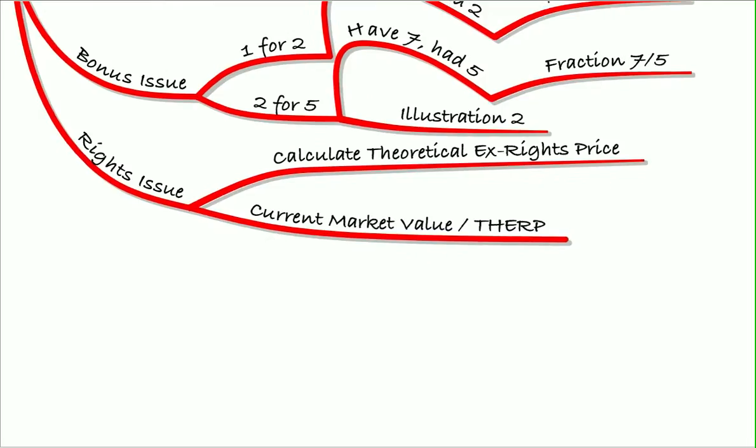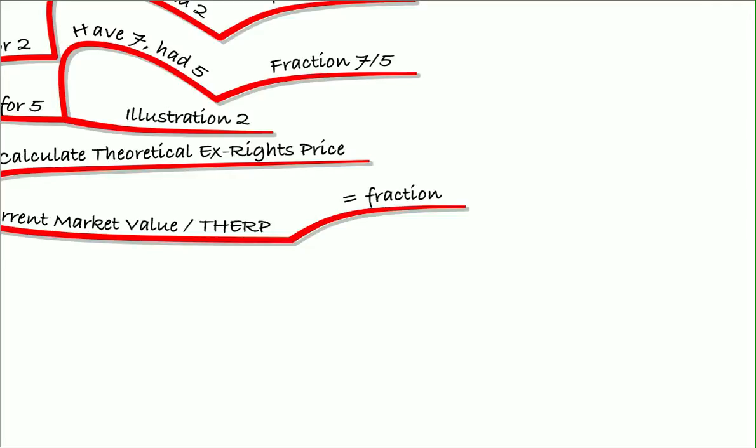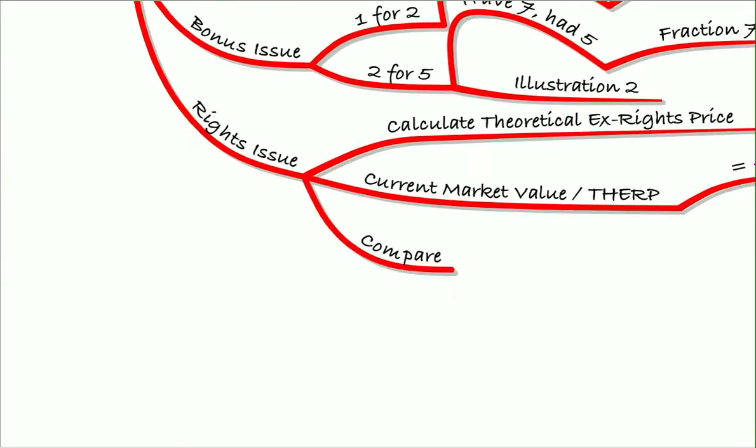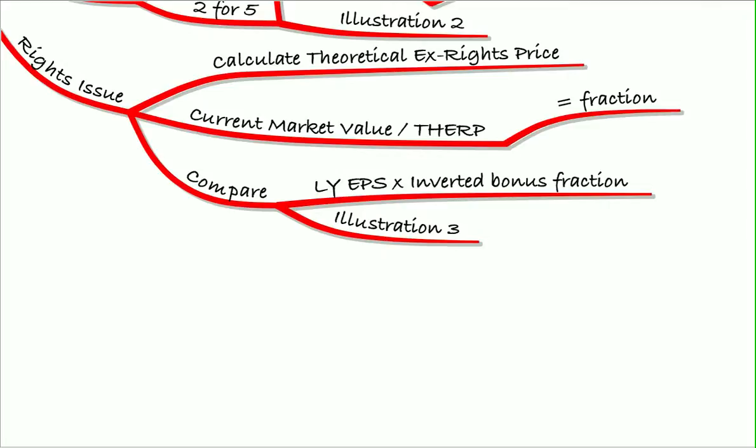So our fraction was the current market value of the share over the theoretical ex-rights price. So that equaled our fraction. To compare to last year, then what we did was we took last year's earnings per share and multiplied it by the inverted fraction. We turned the fraction upside down and multiplied it by last year's earnings per share. And we did that in illustration three.